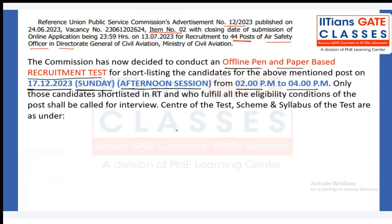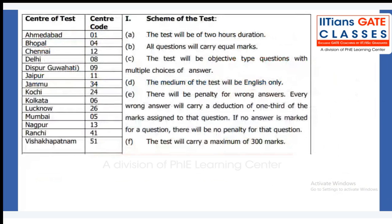You need to qualify the recruitment test first, then meet all eligibility criteria, and then you will be called for the interview. The scheme of the test is two hours duration. The total number of marks is 300 marks. All questions carry equal marks and will be objective type multiple choice questions.